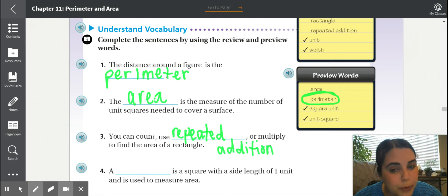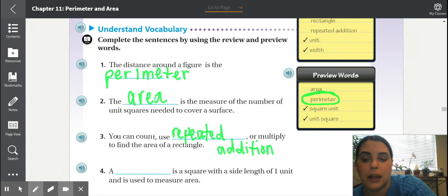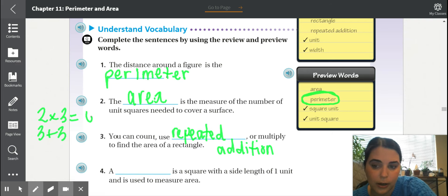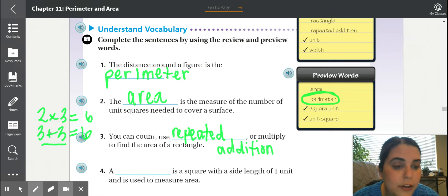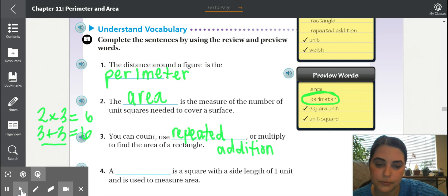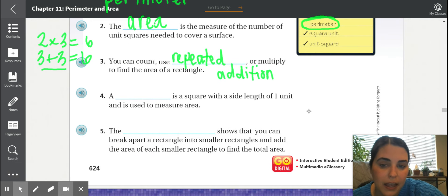Number three. You can count or use blank or multiply to find the area of a rectangle. And that is repeated addition. Repeated addition is preview words. We've used repeated addition to find how to multiply. So an example could be 2 times 3. That's the same thing as 3 plus 3. They are both 6. That's repeated addition. We can use that to find the area of a rectangle.